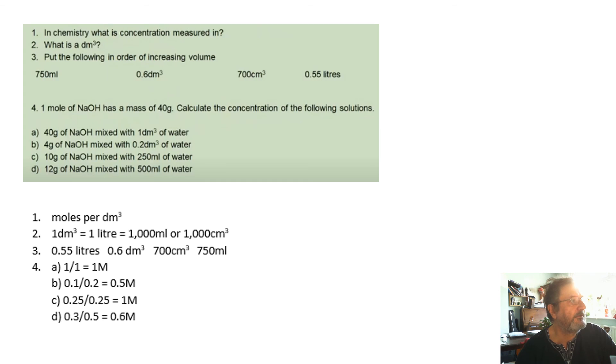And so putting those in order, you know, 0.55 liters is 550 milliliters, 0.6 decimeters cubed is 600 milliliters, 700 milliliters, 750 milliliters, etc.